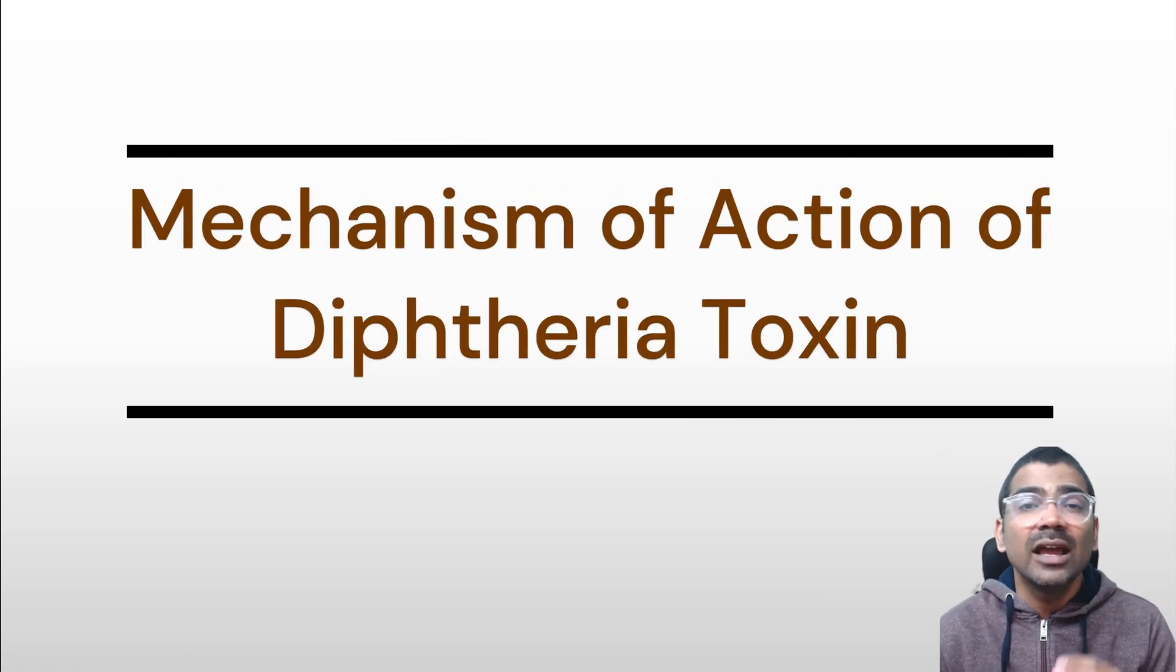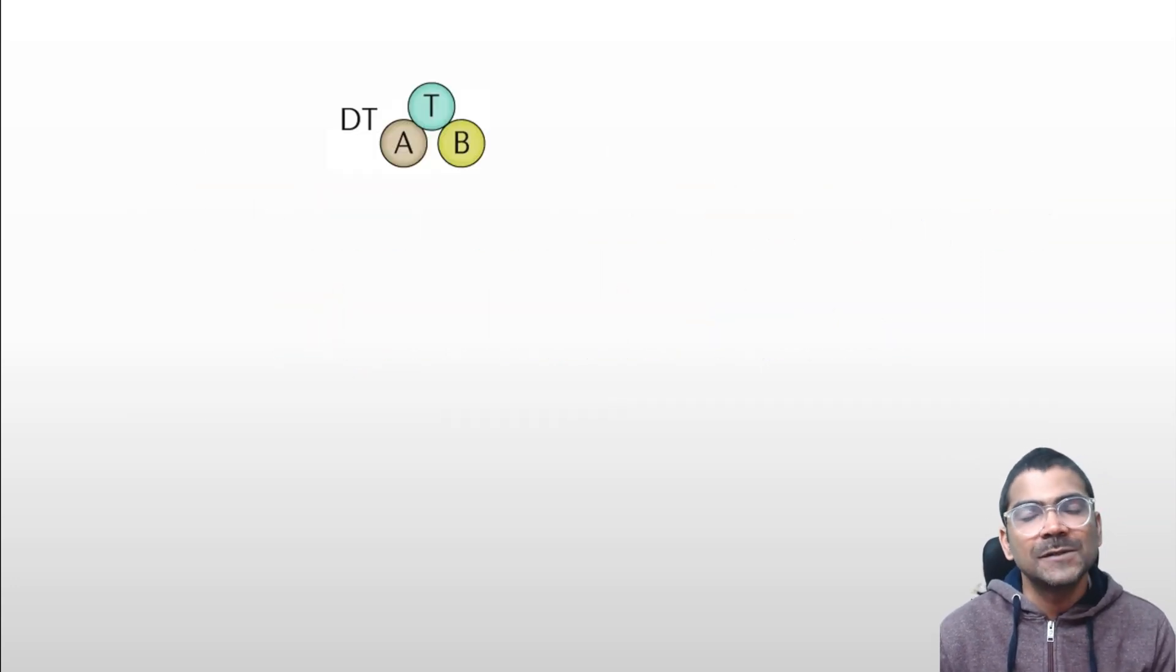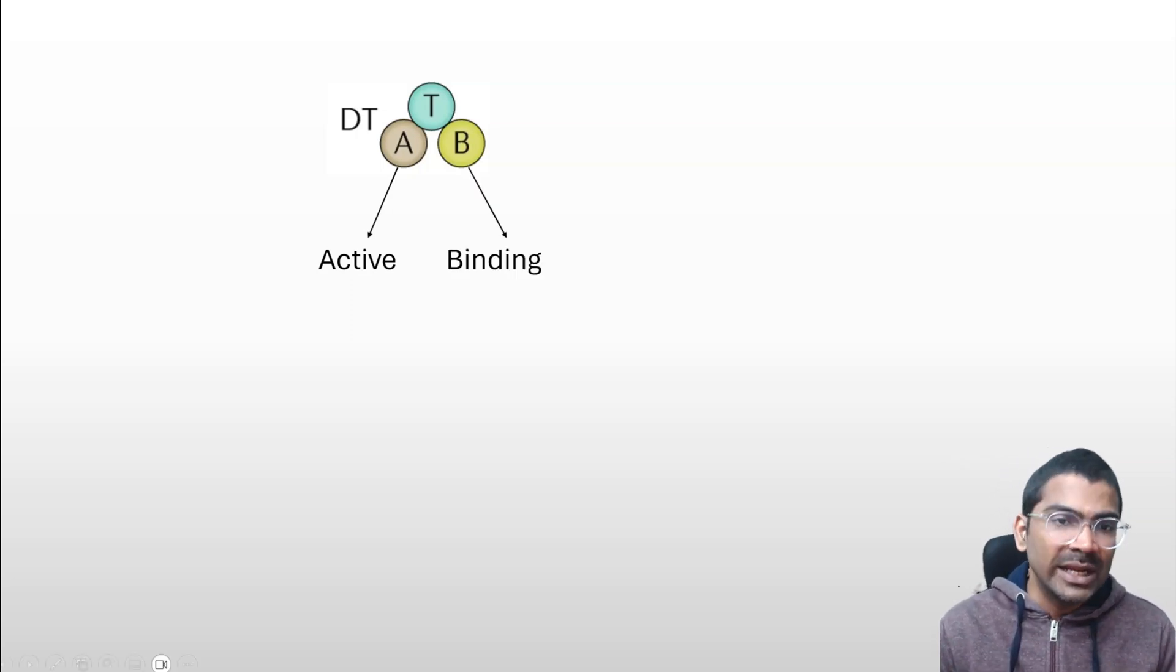Diphtheria toxin is an exotoxin made up of two subunits. The A subunit is the active subunit with catalytic activity, while the B subunit is involved in binding.